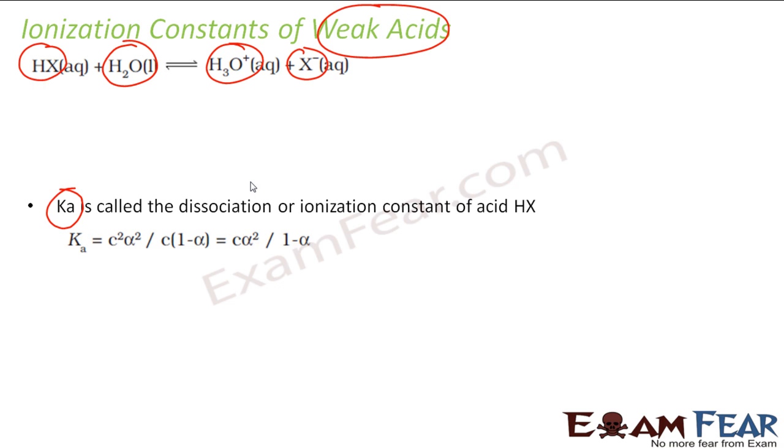And how we got this value, let's suppose we had some C moles of HX. We can ignore at t equals 0, and this was 0 and this was 0. At t equals 0 what happened, this becomes C into 1 minus alpha. Let's suppose alpha is my ionization, I mean degree of dissociation, and this becomes C alpha and this becomes C alpha.